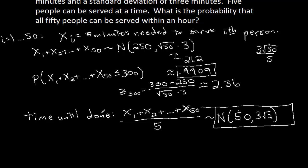So that last little discussion, this time until done, that did not help us answer the question. All it did is gave us a little bit more insight into what was going on here. What's the probability that all 50 people can be served within an hour? That is 99%, approximately.